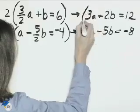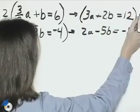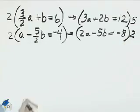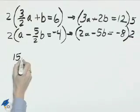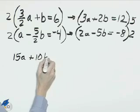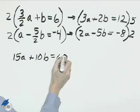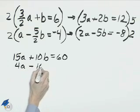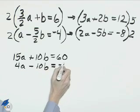I'll multiply this first equation by 5 and the second equation by 2. That will give us 15a plus 10b equals 60. The second equation is 4a minus 10b equals negative 16.